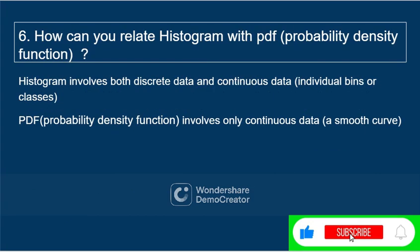How can you relate a histogram with PDF? A histogram involves both discrete and continuous data, whereas PDF — probability density function — involves only continuous data.